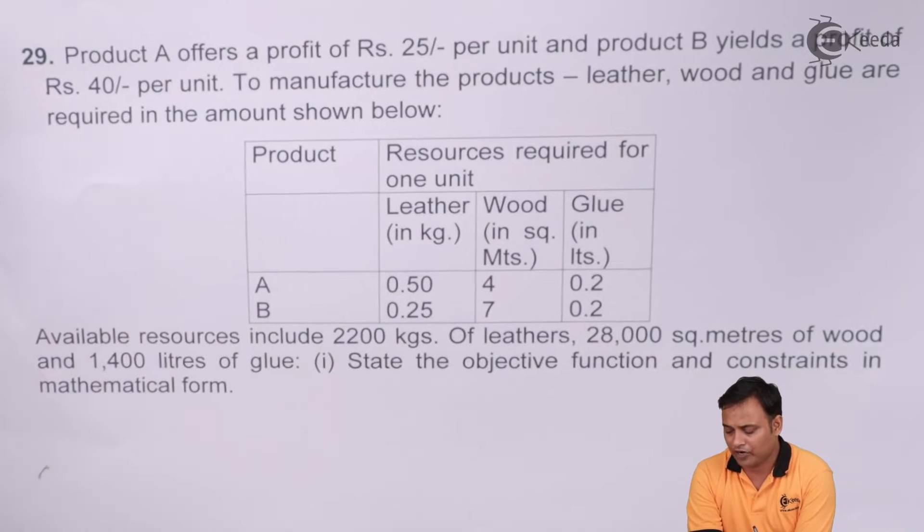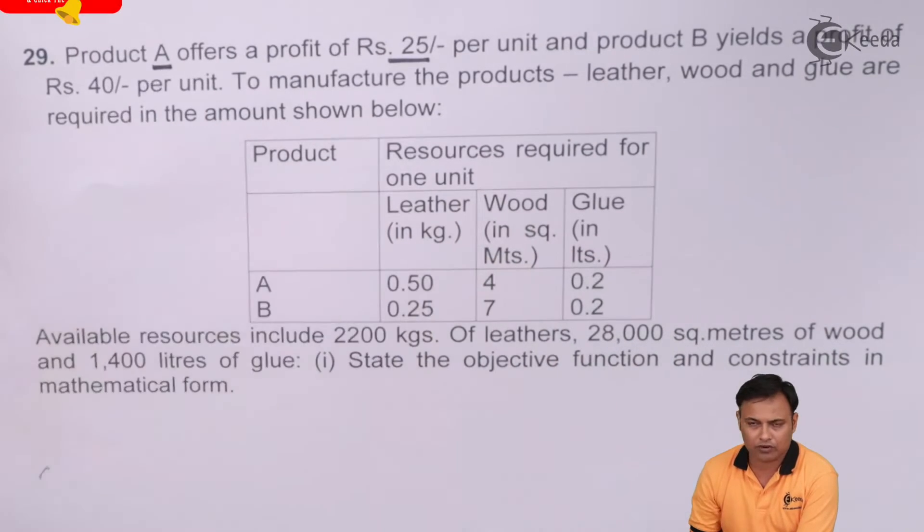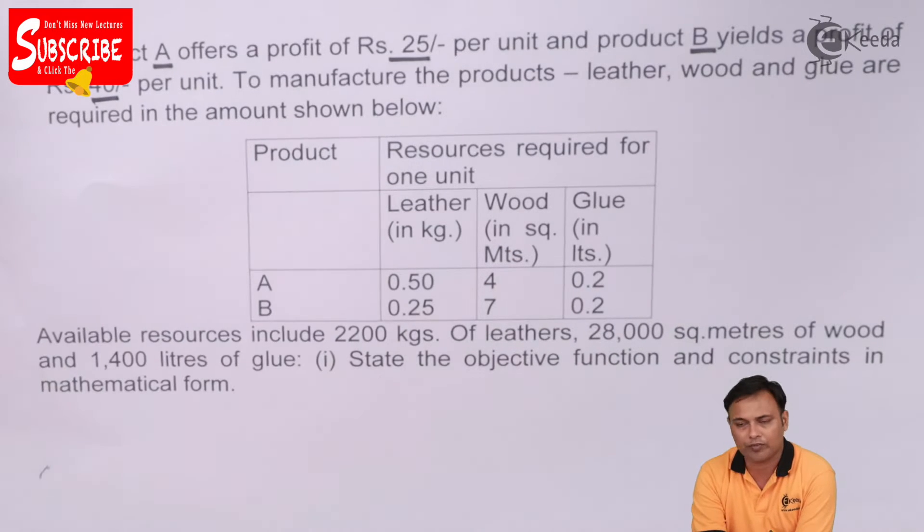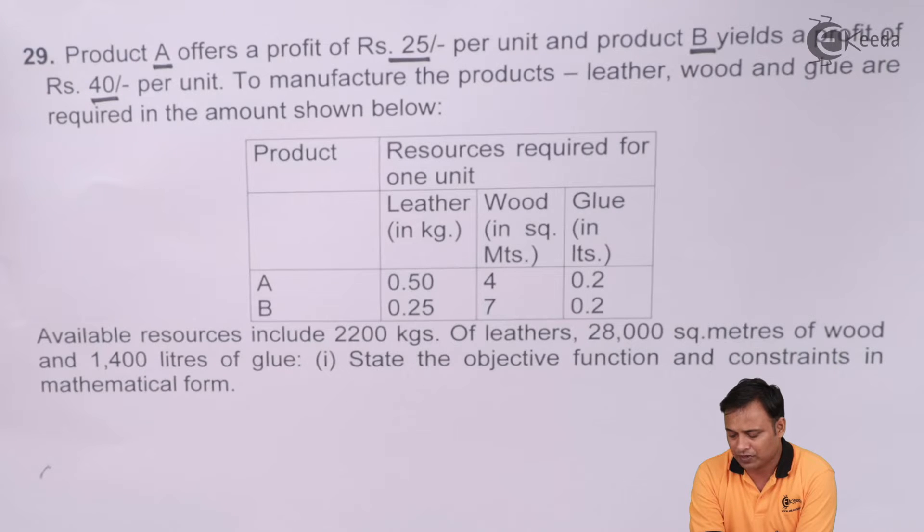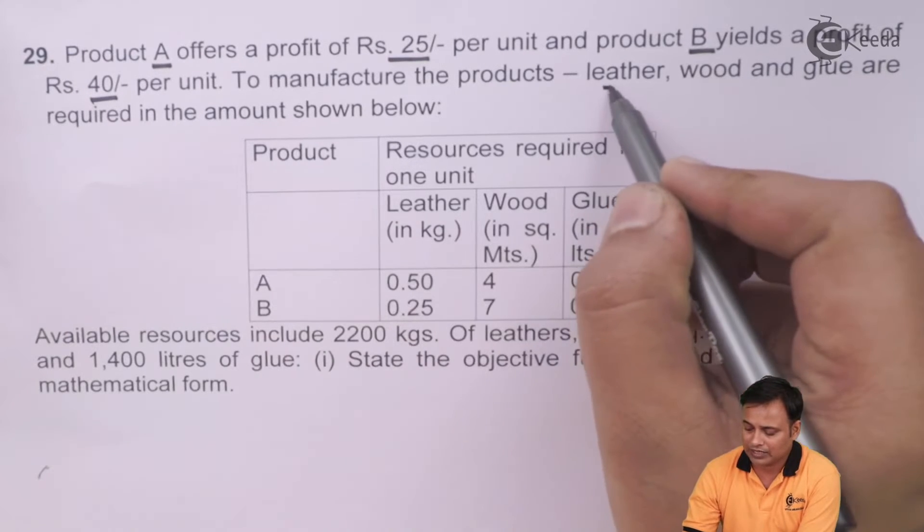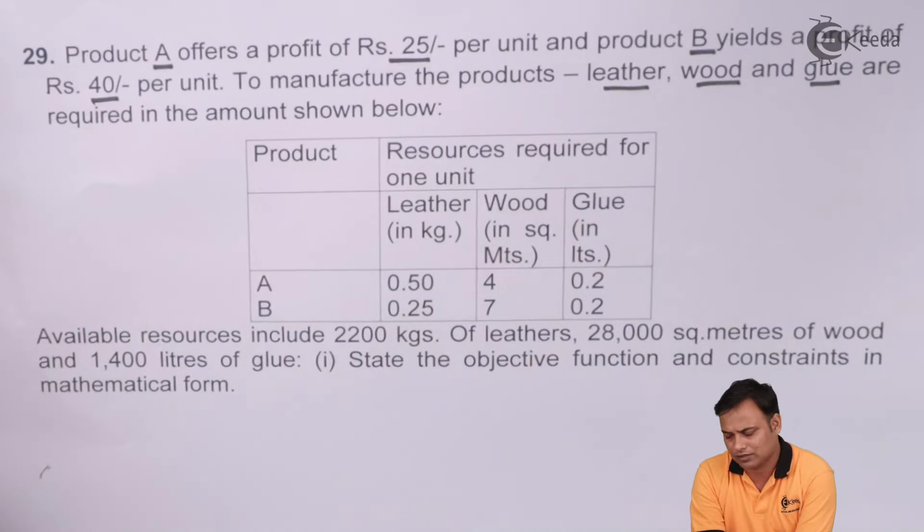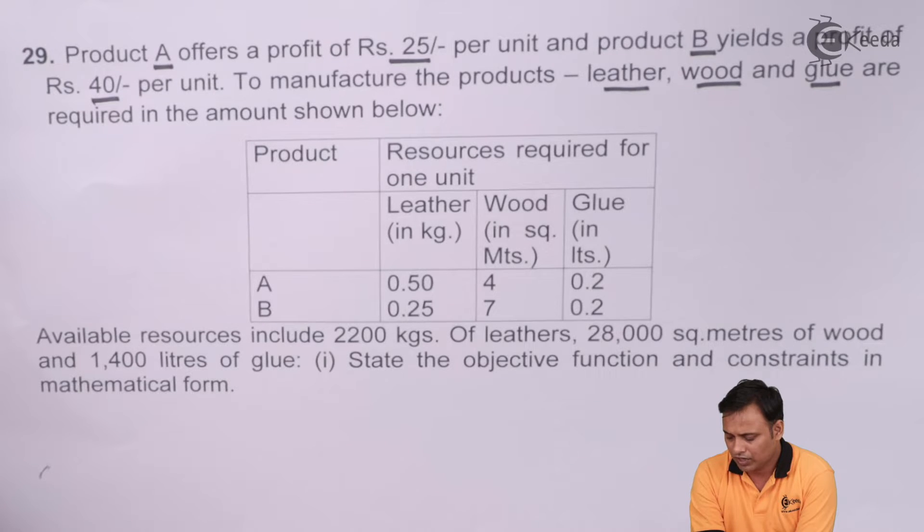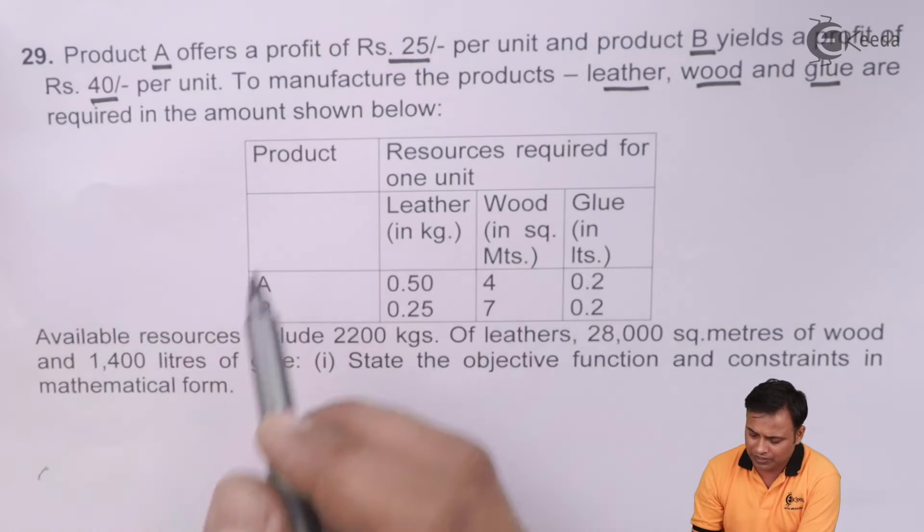Product A offers a profit of 25 per unit, and B profit 40 per unit. To manufacture these products, we require leather, wood and glue - three things. In what quantity? They are already given in the table format.